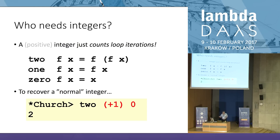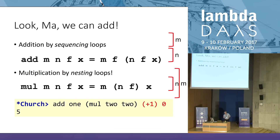Now I can represent integers as functions, but for that to be useful I want to operate on them without converting back to normal integers. Can I add two of these functions? How would I iterate a loop body m plus n times? Just sequence the loops: first iterate it n times, then iterate m more times on the result. That will execute the body m plus n times. This add function adds integers together in this representation.